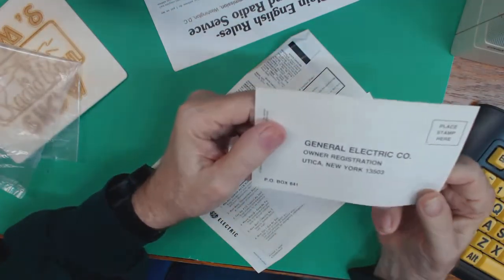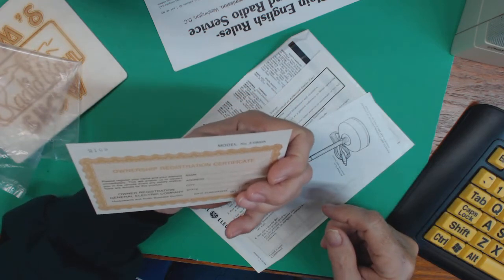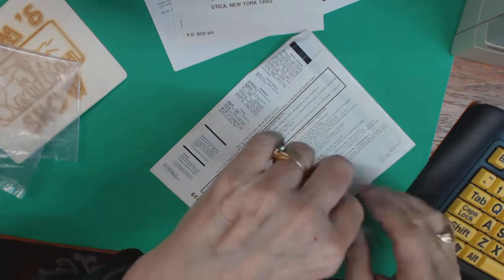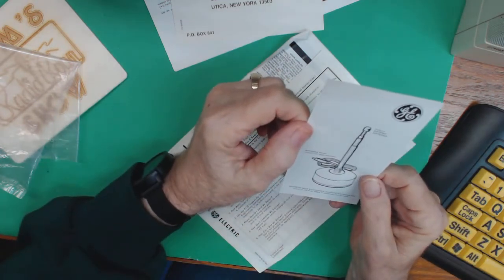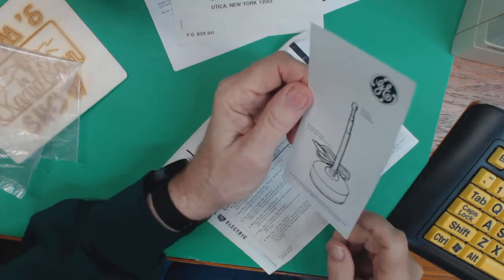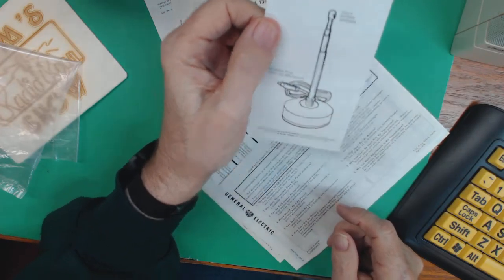Here is, and this was a GE device. Here is the owner registration card, which was never sent in. Okay. And here we have a little detail about the antenna. It's a little telescopic mag mount antenna.